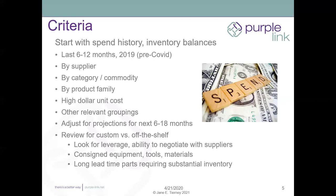You also want to look at suppliers from whom you buy high-dollar items. You may not buy a lot of them, but they may be very expensive. If you have parts between $10 and $100, and then a couple of parts you buy repetitively that are $1,000 or more, that makes that supplier more valuable to your company and presents more potential risk. So even if the total spend isn't large because you only buy a few, if you continue to buy them, that's important.